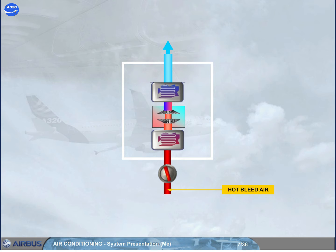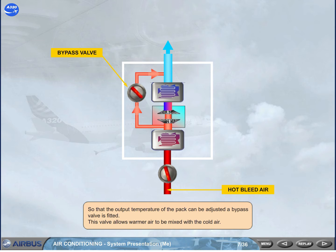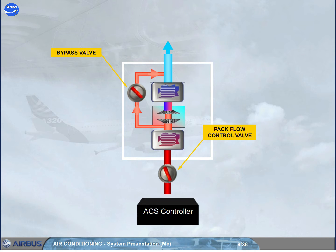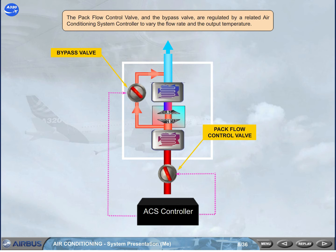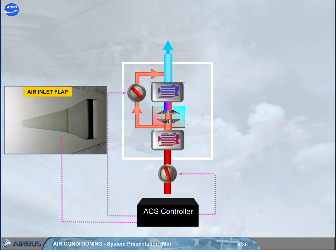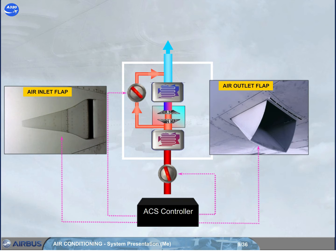So that the output temperature of the pack can be adjusted, a bypass valve is fitted. This valve allows warmer air to be mixed with the cold air. The pack flow control valve and the bypass valve are regulated by a related air conditioning system controller to vary the flow rate and the output temperature. The related ACS controller also controls the related ram air inlet and outlet flaps to adjust the amount of air blowing through the heat exchangers.